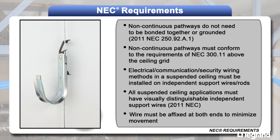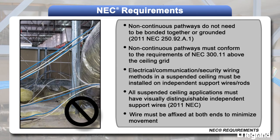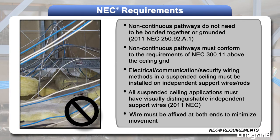NEC has several requirements for the proper installation of J-hooks. For example, J-hooks should be installed on clearly identifiable independent sealing wires or rods that are affixed at both ends. Also, cables should never be allowed to lay directly on sealing tiles or rails.